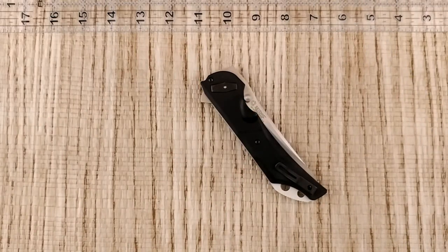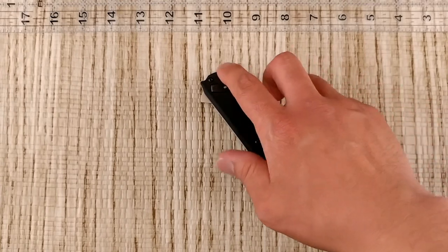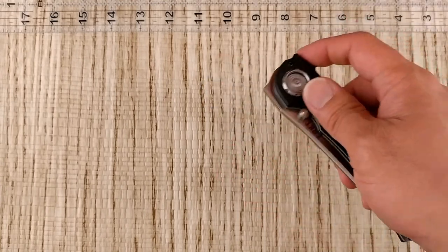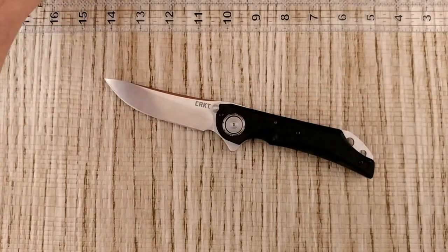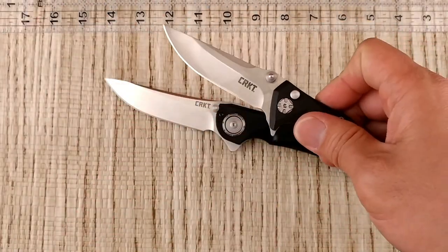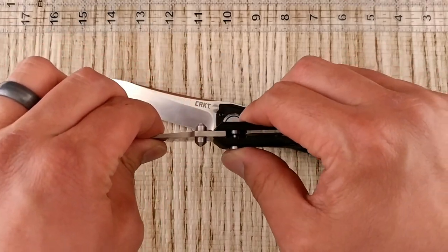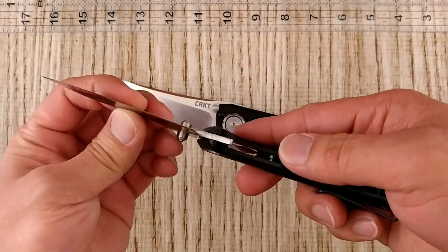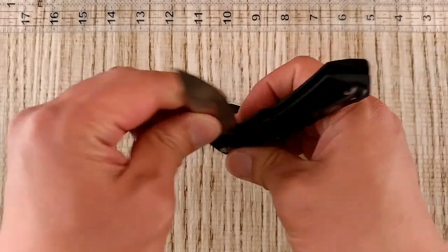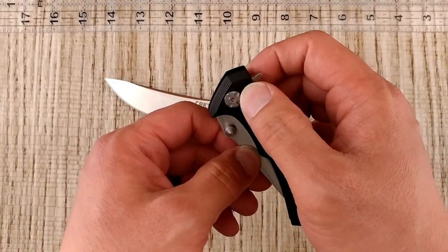That's nearly five pounds of pull. Normally about two or three is pretty decent for it. This one actually has something a little bit different. A lot of the button locks, like this one here also a CRKT knife, the button locks actually have the detent done by the button lock itself or that plunge lock.